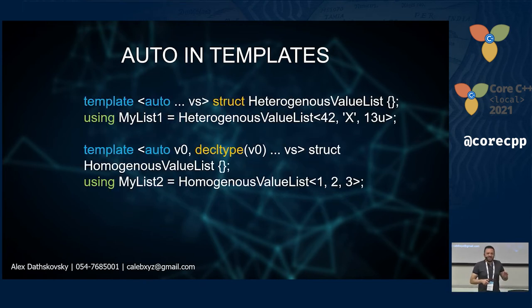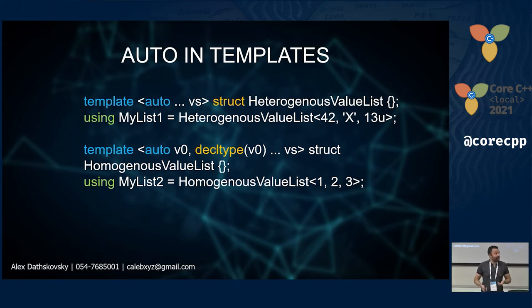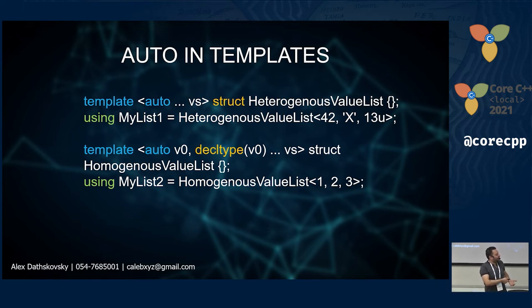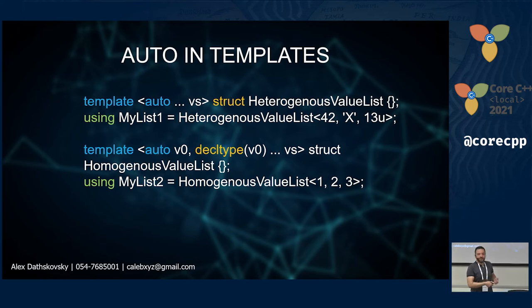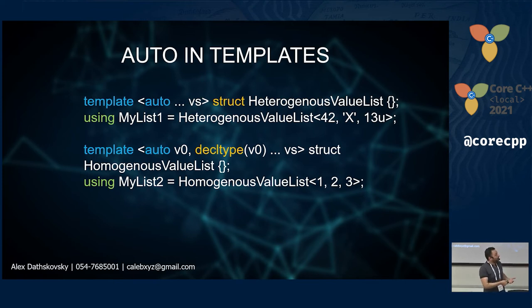Here's a slightly more complex example: creating a heterogeneous list. With C++17 you can write auto... vs as a variadic pack of autos, and pass 42, 'x' (a char), and 13u (unsigned int) — it creates the list automatically. If you want a homogeneous variadic list, you use auto for the type, then decltype to extract the type from one element and constrain the rest to the same type. You can then only init with values of that same type.